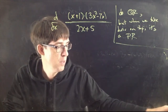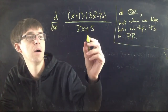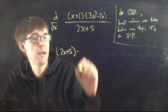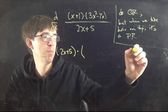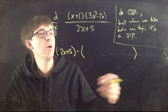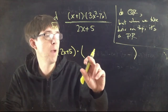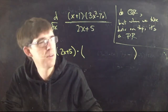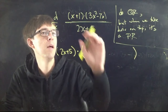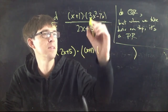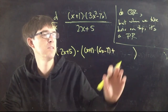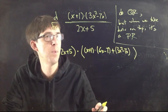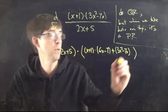Strategy: do the quotient rule (QR), and when taking the derivative on top, use the product rule (PR). Applying the quotient rule: bottom times derivative of top, minus top times derivative of bottom, over bottom squared. For the derivative of the top — a product — I use the product rule: first thing (x+1) times derivative of second thing (6x−7), plus second thing (3x²−7x) times derivative of first thing, which is just 1.